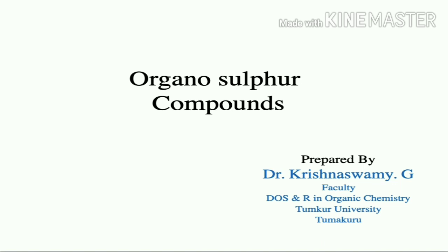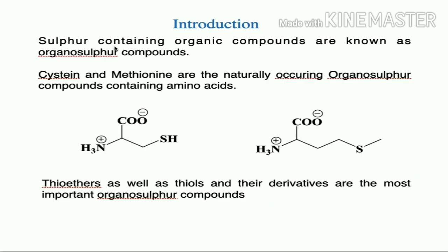As a continuation to the importance of organometallic compounds in organic synthesis, today we will learn organosulfur compounds — sulfur-containing organic compounds. Cysteine and methionine are the naturally occurring organosulfur amino acids, both containing a sulfur atom, and serve as very good examples of organosulfur compounds.